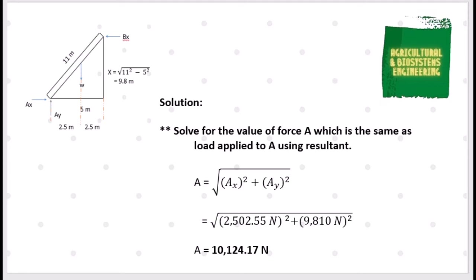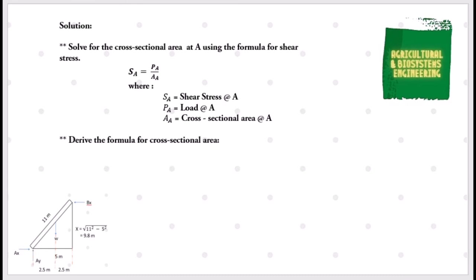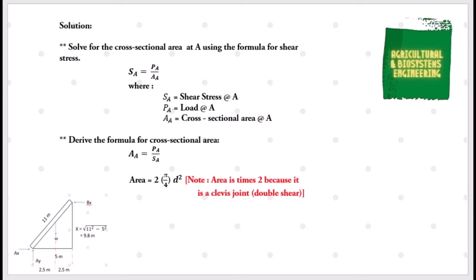After finding the value for pin A, we use it to solve for the cross-sectional area using the shear stress formula: shear stress at A equals load at A divided by cross-sectional area at A. Rearranging gives cross-sectional area equals load at A divided by shear stress at A. The area formula is π/4 times diameter squared. Note that pin A is a clevis joint, meaning it is double shear, so we multiply by 2. Load at A is 10124.17 N and shear stress is 50 MPa as stated in the problem.